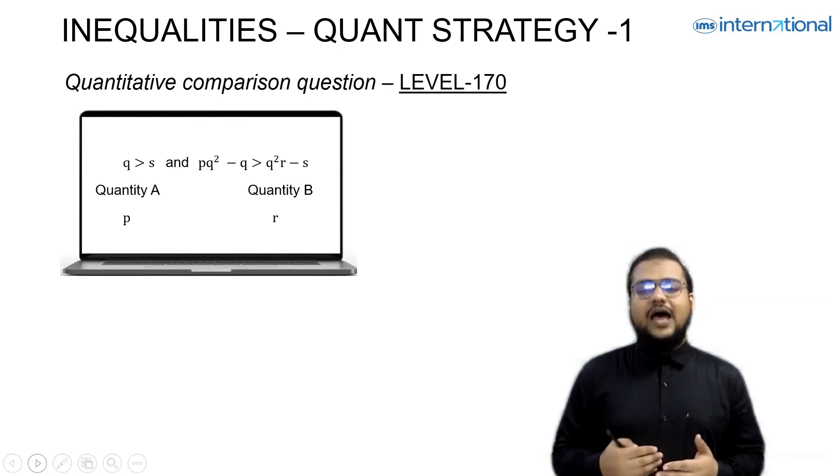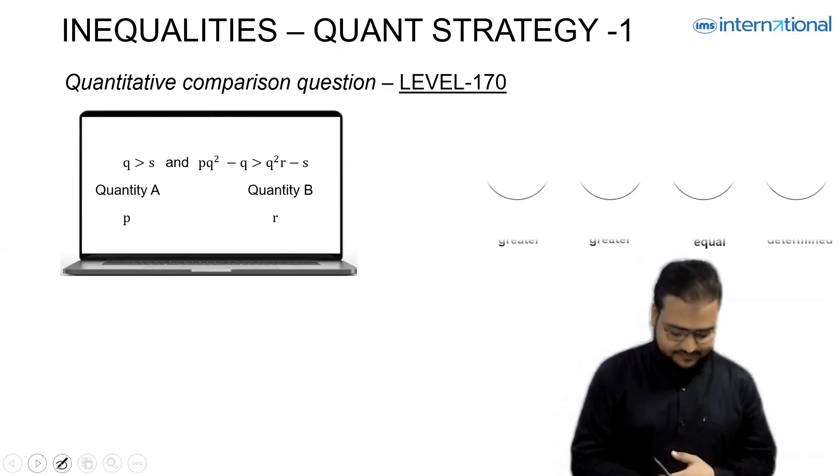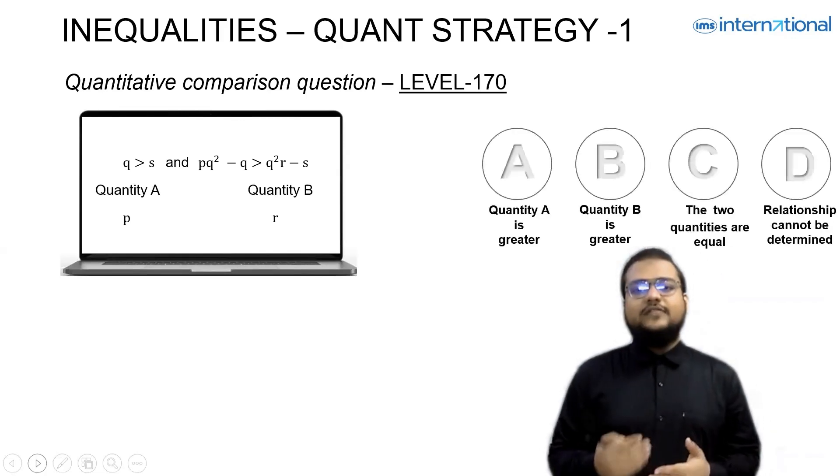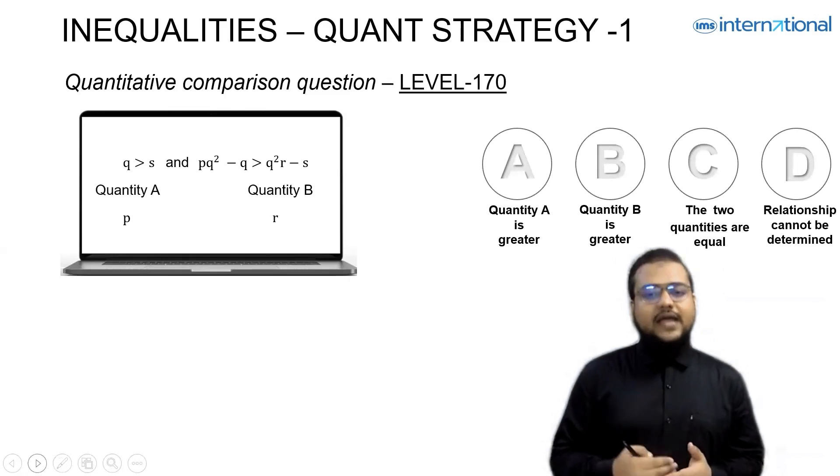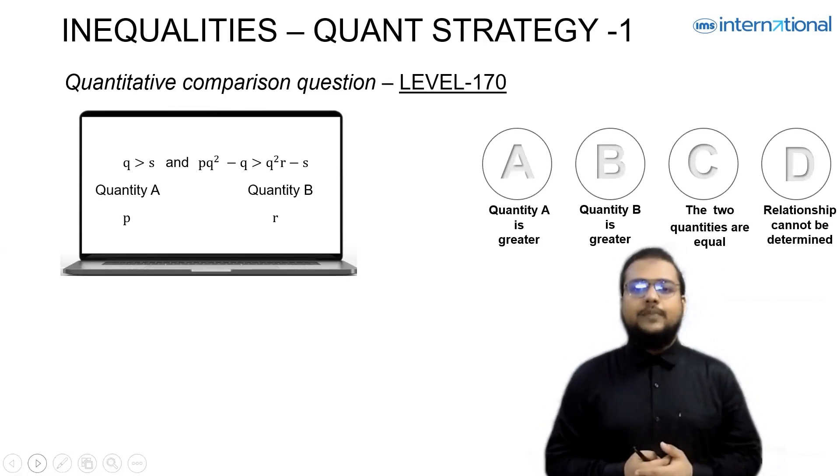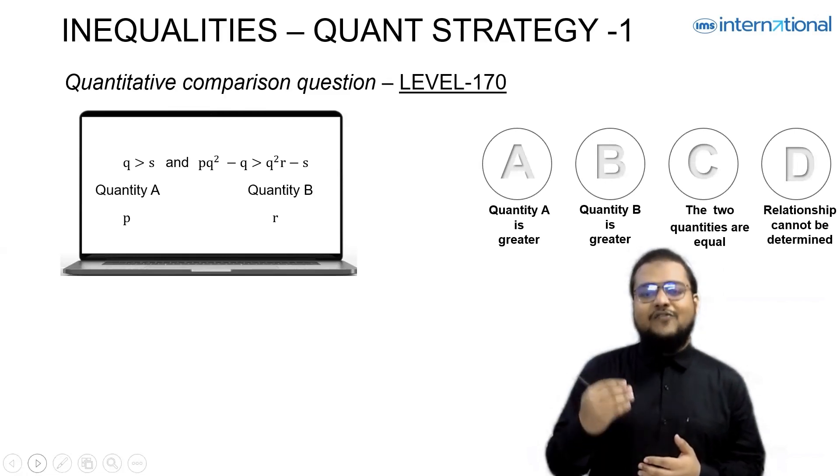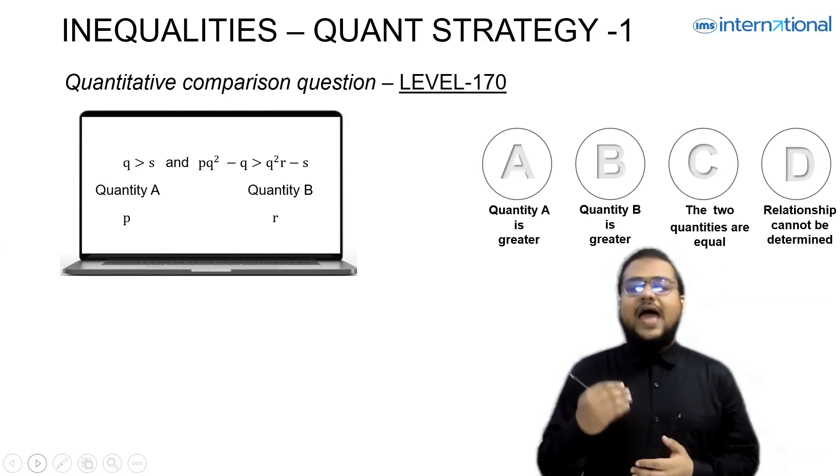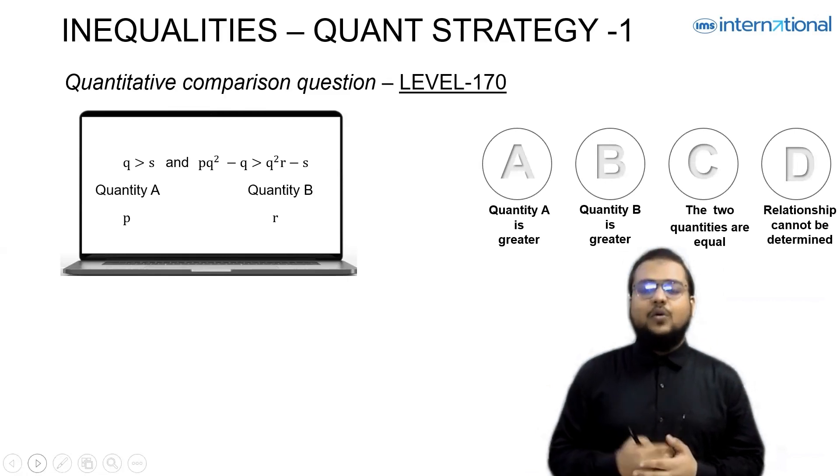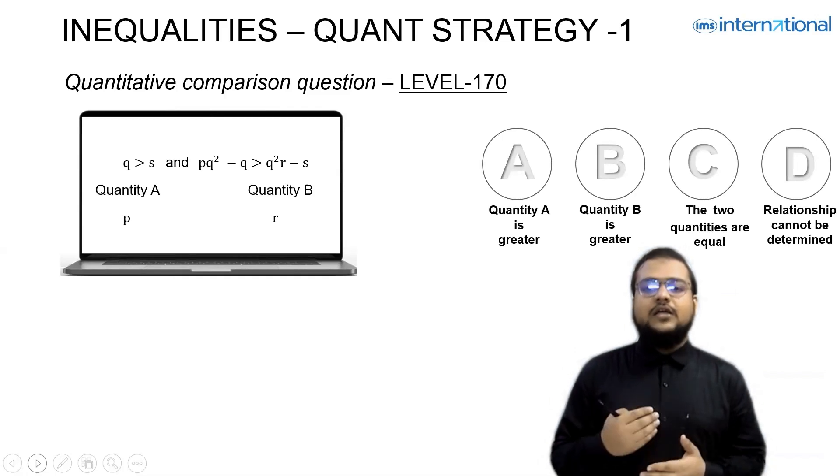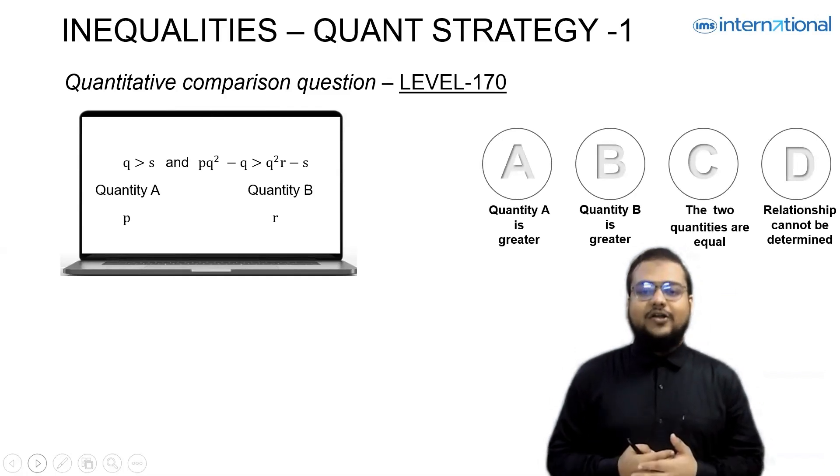For this question, I'd like to discuss those answer choices. Answer choice A will be correct when quantity A is always greater than quantity B. Answer choice B will be correct when quantity B is always greater than quantity A. Answer choice C will be correct when both quantities are always equal. But if you are not able to get a unique relationship, then you have to mark answer choice D, which means the relationship cannot be determined.